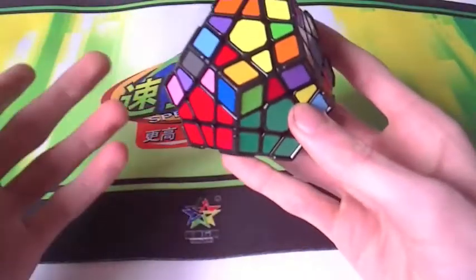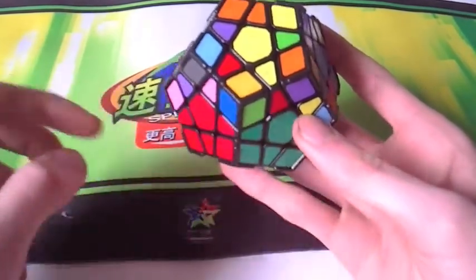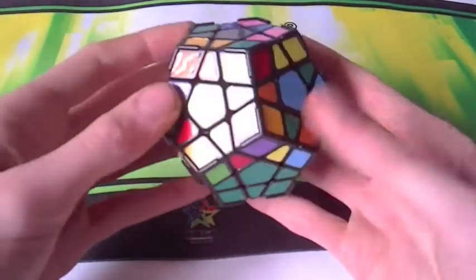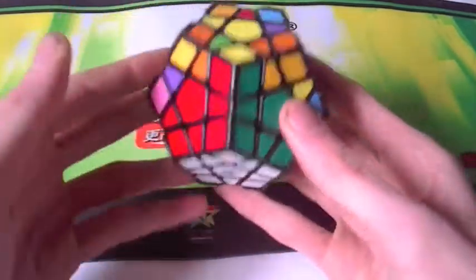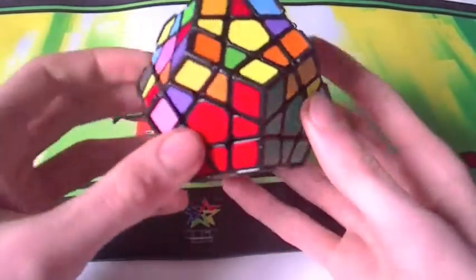So now what we need to do is get a V, which is these three pieces, a corner and two edges. I personally call it a V. I have no idea what it's actually called. First we put in a corner of red, green, and yellow. It needs to be in this order. Just a corner.